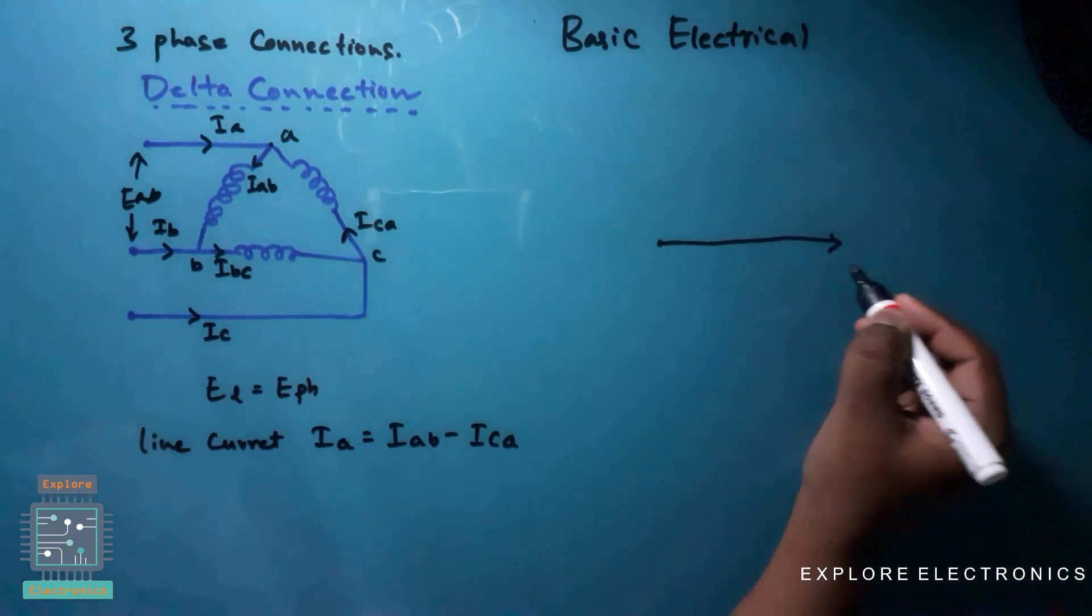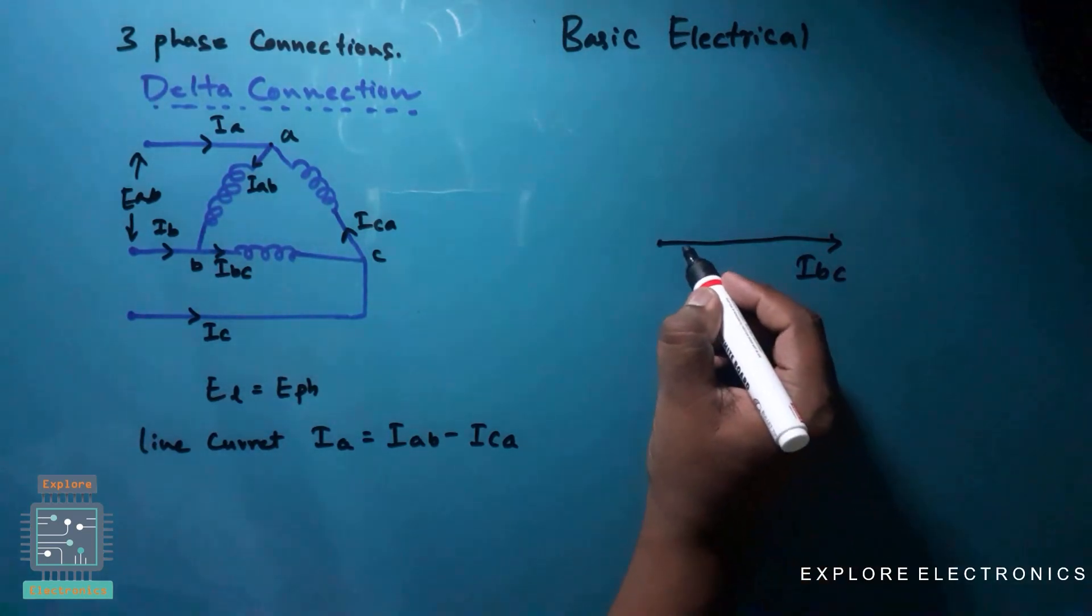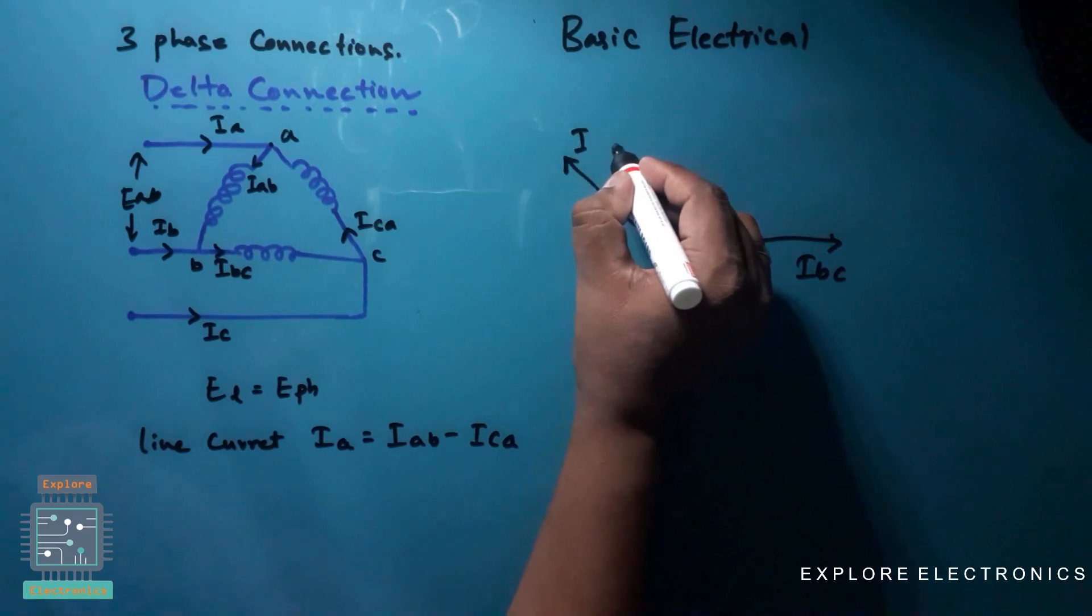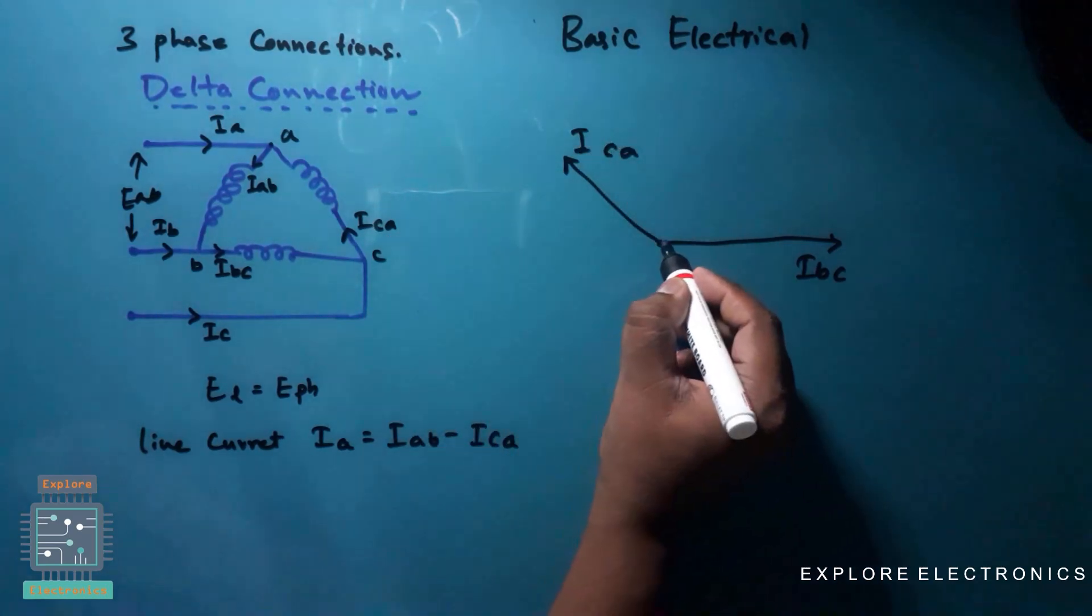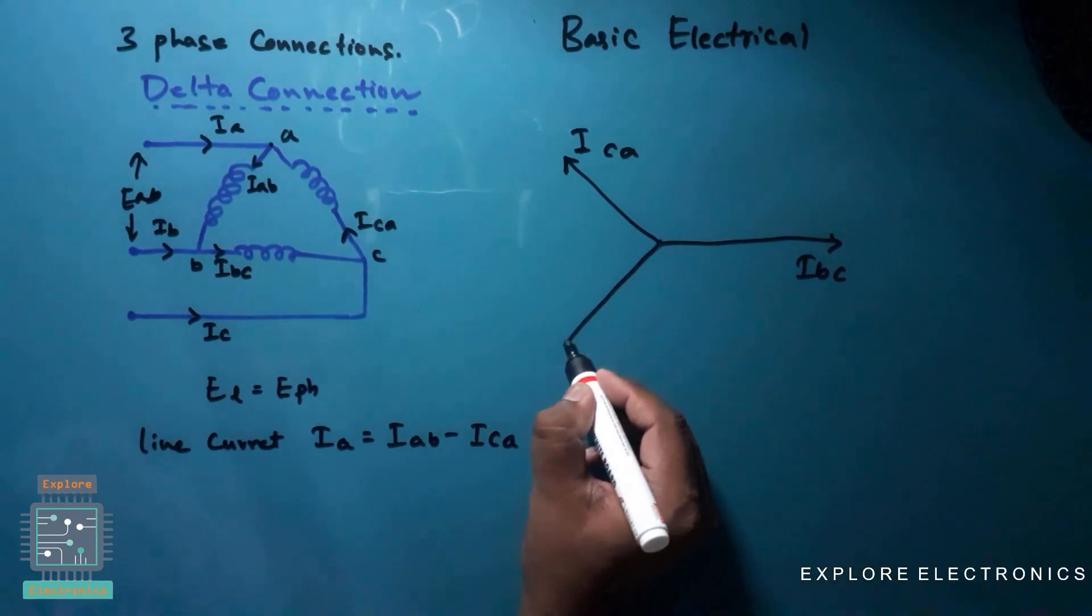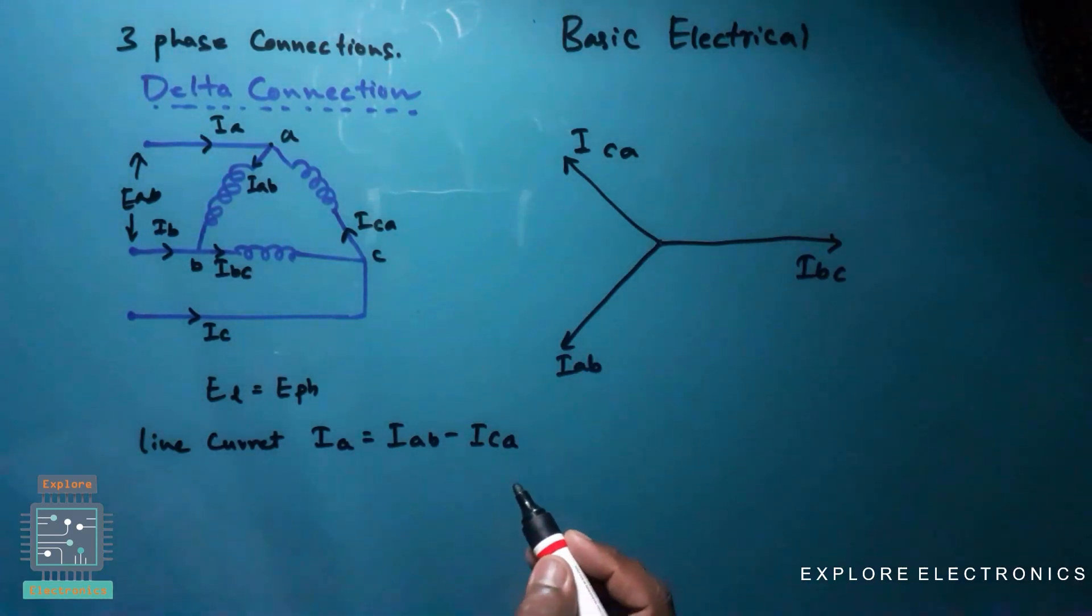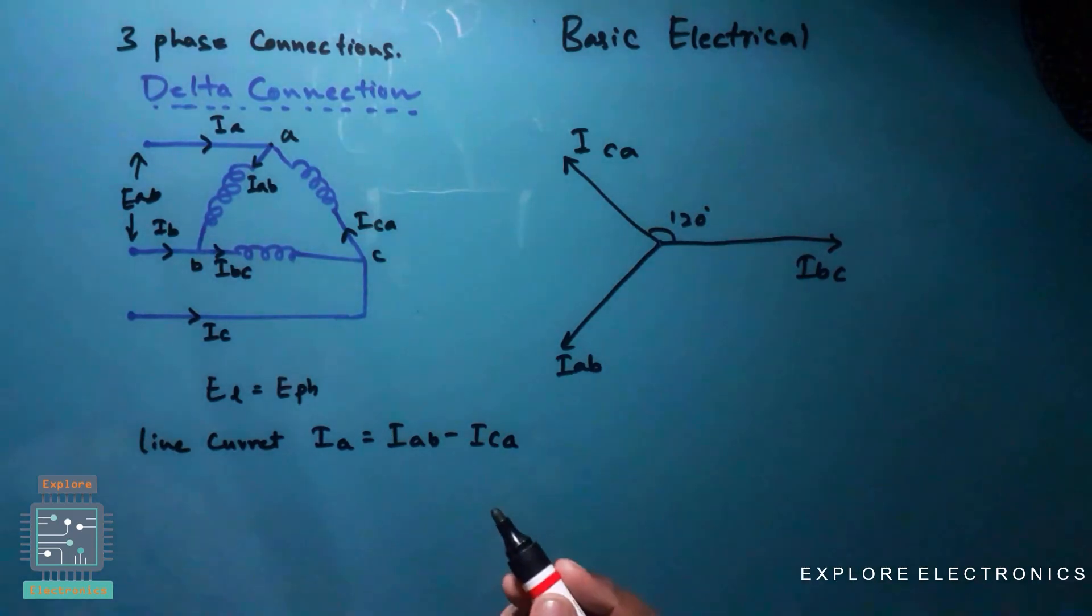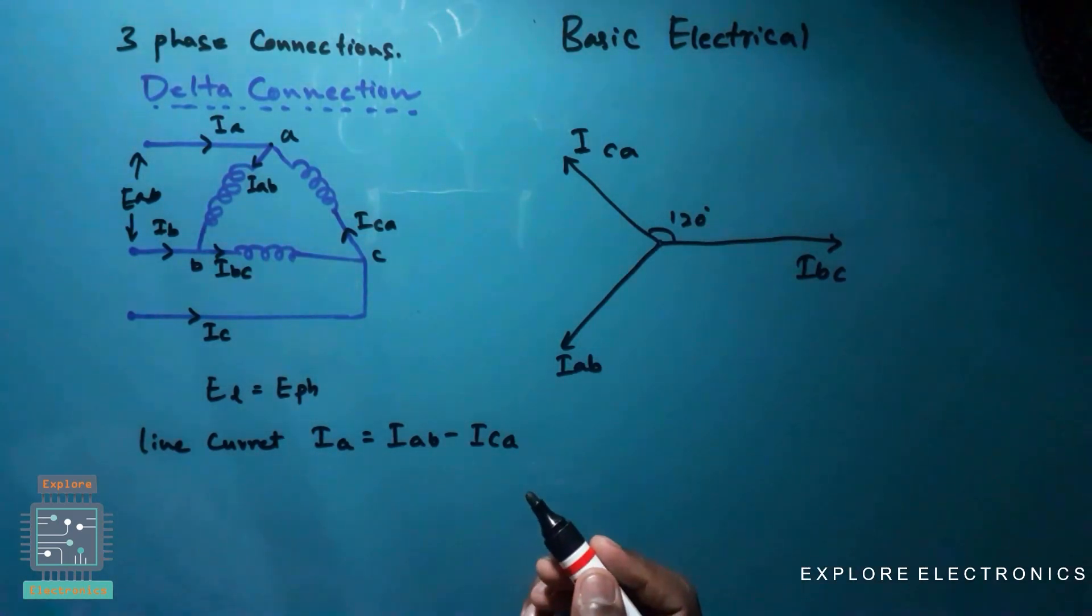Let me treat this as Ibc phasor, and here we have Ica, this is Ica, and here I will be having Iab. These three are the phasors which are differed by 120 degree. Similarly as we seen in the star connection which are voltages, here they are currents.